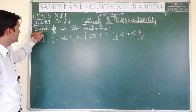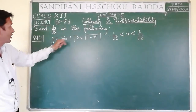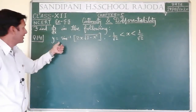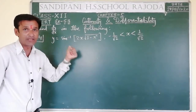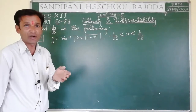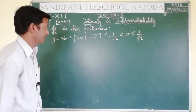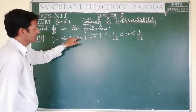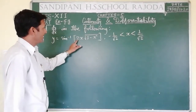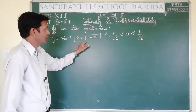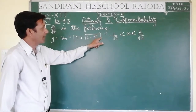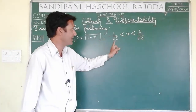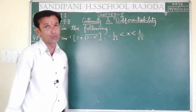Here the question is: find dy by dx in the following. We are discussing question number 14, because up to question number 13 we have already done in our previous part. It is y is equal to sin inverse of [2x√(1 - x²)], and the interval is between -1/√2 and 1/√2.